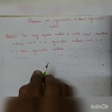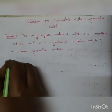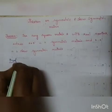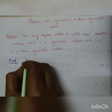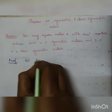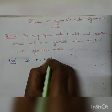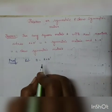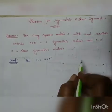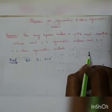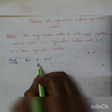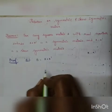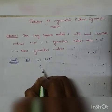Now let us understand this and give the proof for this theorem. Let B be equal to A plus A transpose. We know that symmetric means B is equal to B transpose. So we need to find B transpose.